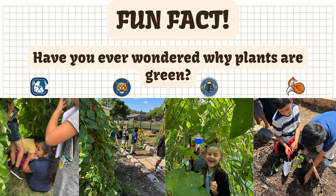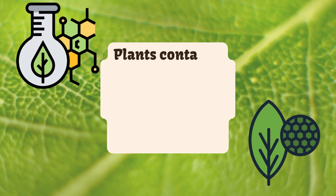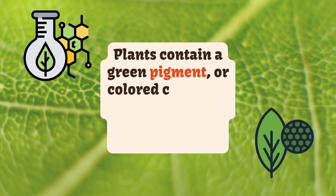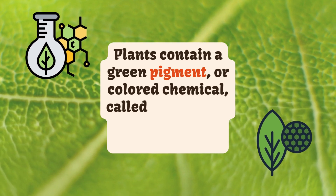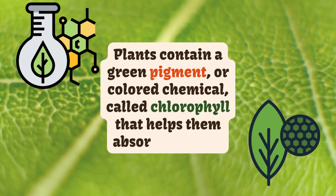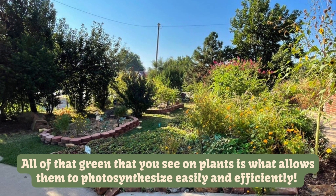Fun fact: have you ever wondered why plants are green? Plants contain a green pigment — or colored chemical — called chlorophyll, that helps them absorb sunlight. All of that green that you see on plants is what allows them to photosynthesize easily and efficiently.